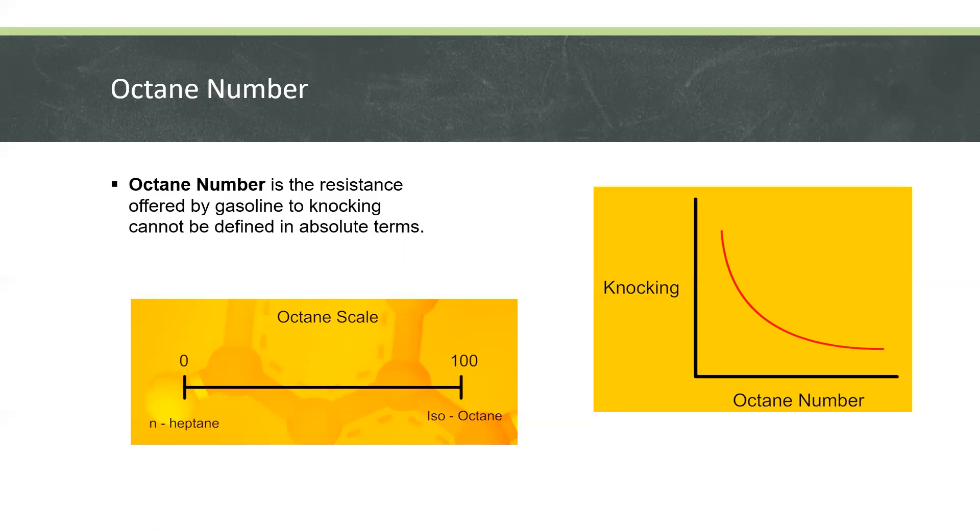But there are some fuels that have higher octane numbers. We can obtain the octane number by averaging the research octane number and the motor octane number, where the research octane number is measured at mild load and low speed, while the motor octane number is measured at heavy load and high speed. That average value is called the anti-knock index.